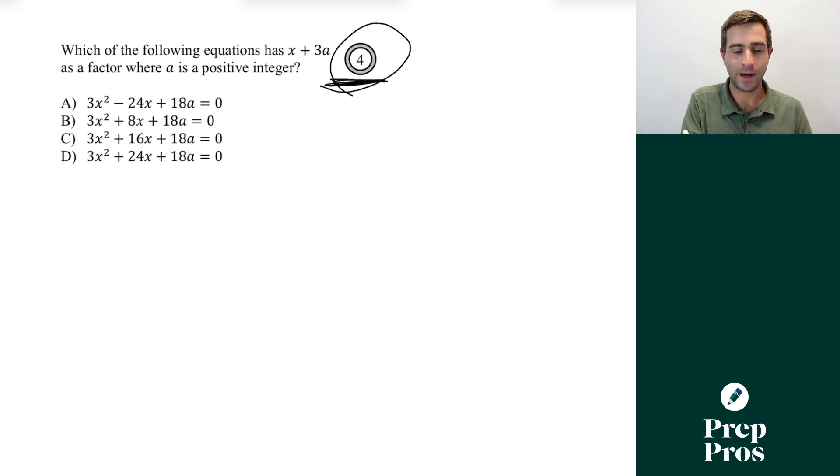So here, since we know x + 3a is a factor, well, if we're solving for x when we know x + 3a is a factor, we always set it equal to zero. So that means x = -3a. So what this now tells us is we can start plugging in -3a for x in each of these equations. Only one of them when we solve through is going to give us a as a positive integer, and that's going to be our correct answer. So that's what strategically we're looking for here. So we're just going to jump to our correct answer here so we don't spend too much time, but we're simply going to plug in -3a for x.